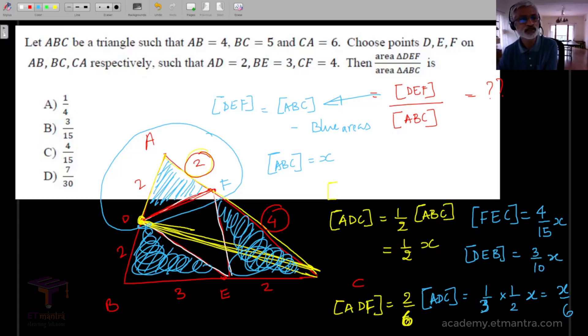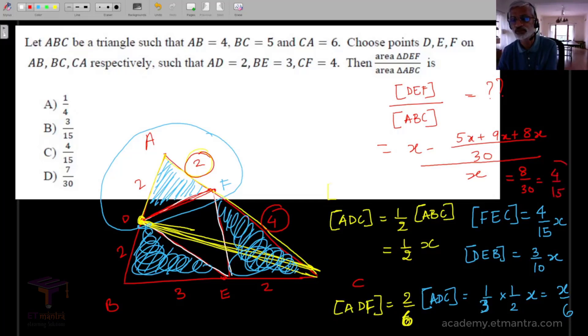So with all this, we can easily do the final calculation. This will turn out to be, what we want will turn out to be, X minus 5x plus 9x plus 8x, and the whole thing divided by X. This will turn out to be 8 by 30, 4 by 15. So the basic geometric fact about the split of areas by these lines is very standard, and that's all you need to do this problem.